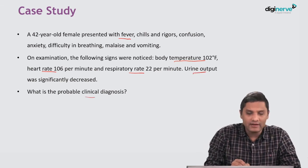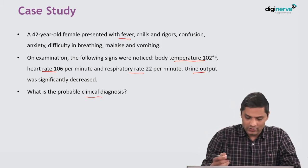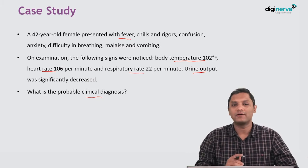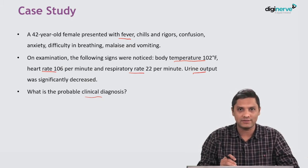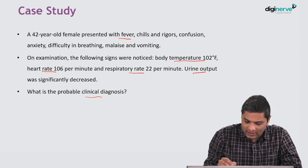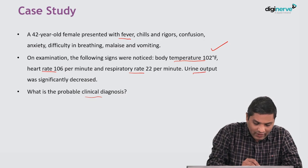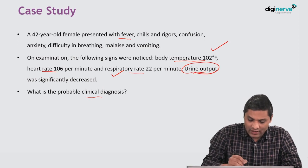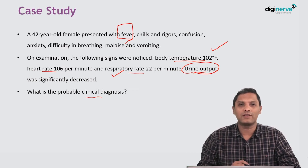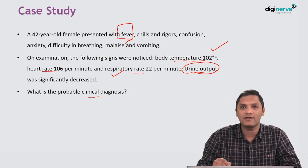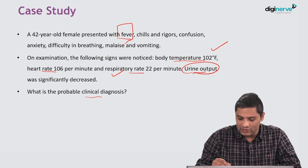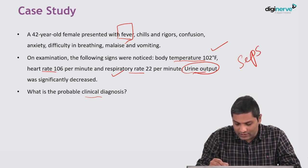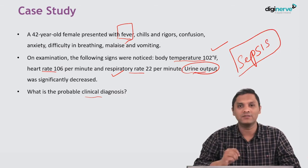So what is the clinical diagnosis? The clinical diagnosis here depends upon the manifestations. The three important manifestations are raised body temperature, raised respiratory rate, decreased urine output, and the patient presented with fever. All these together put into the probable clinical diagnosis of sepsis. This is probably a case of sepsis.